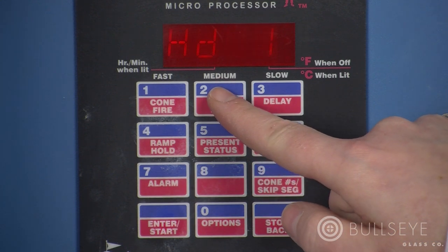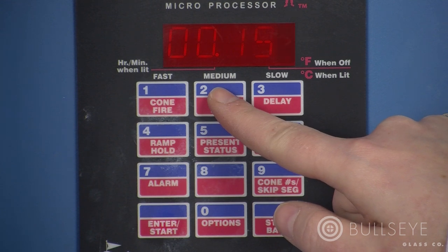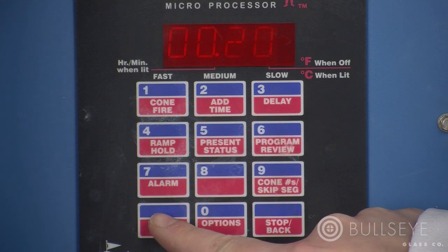If a piece has not yet slumped near the end of the process soak, add time to the hold and continue to fire until the glass has formed as desired.